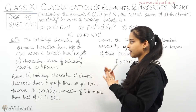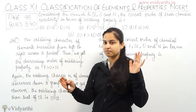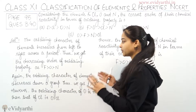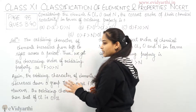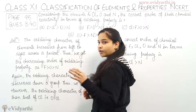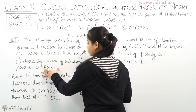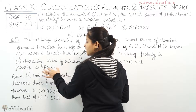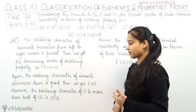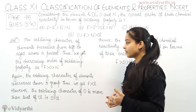As the oxidizing character of the elements increases from left to right in a period, the decreasing order of oxidizing property among fluorine, oxygen, and nitrogen is: fluorine has the highest oxidizing character, then oxygen, and then nitrogen.